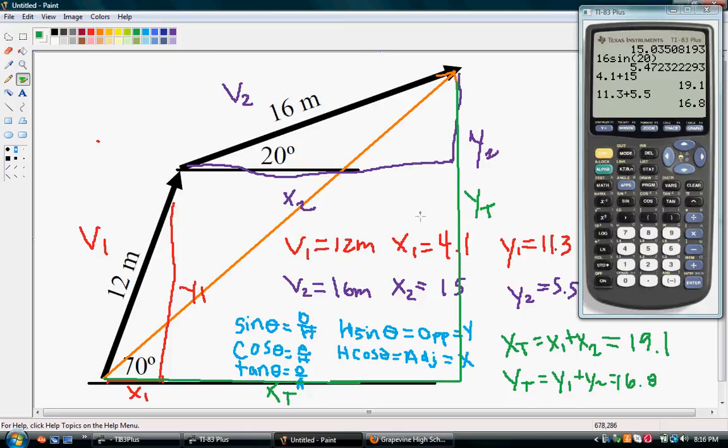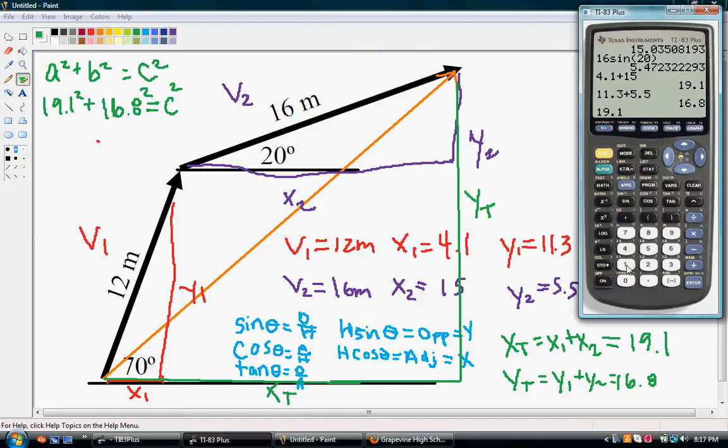Now, we have to use the Pythagorean theorem to solve for the resultant. So, we're actually going to be using a squared plus b squared equals c squared. Let's say that 19.1 is a. And 16.8 is b. And that equals our resulting vector squared. So, 19.1 squared plus 16.8 squared equals 647.